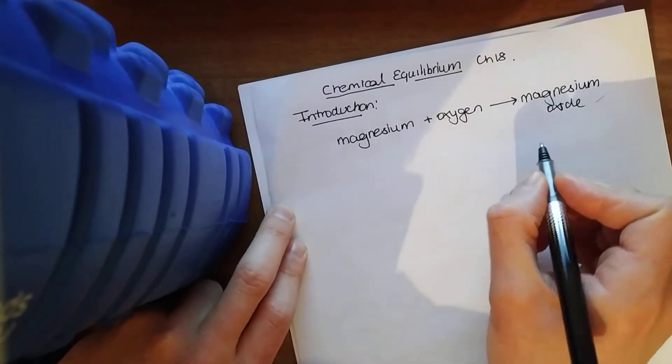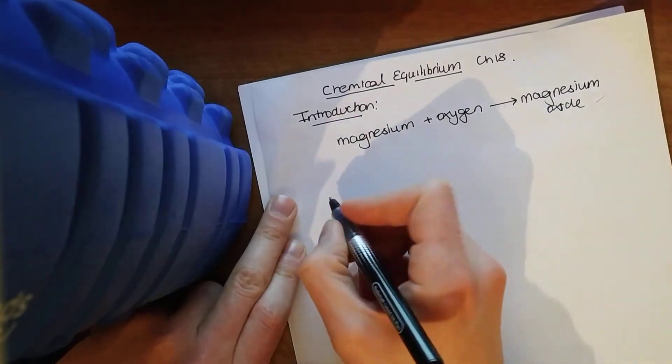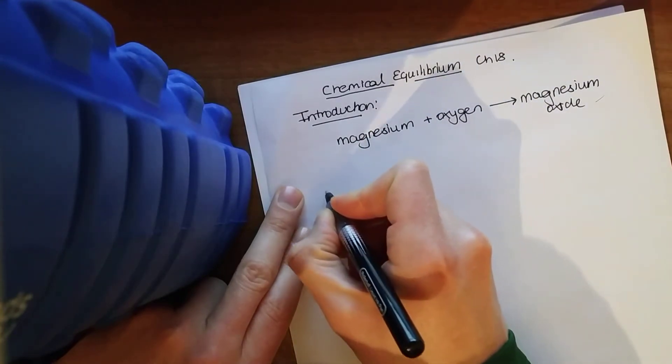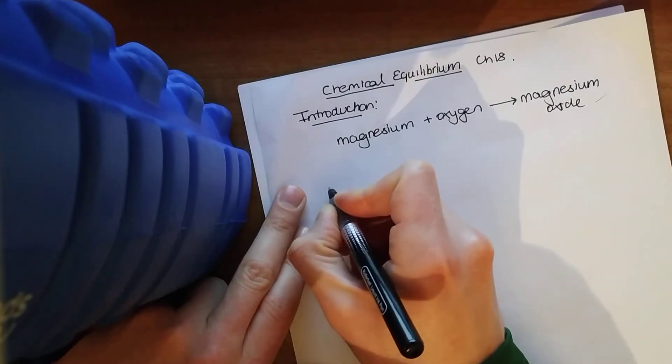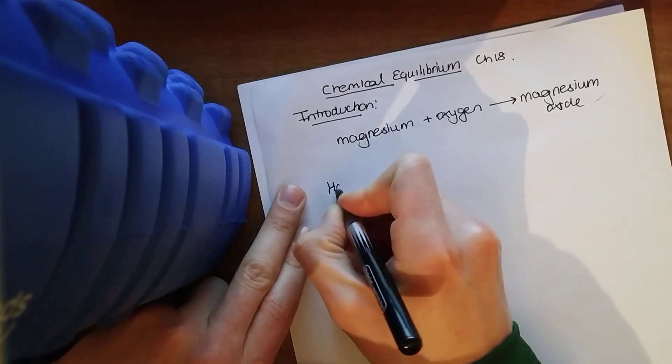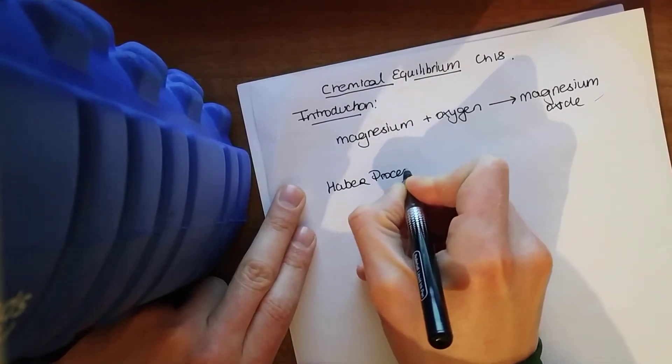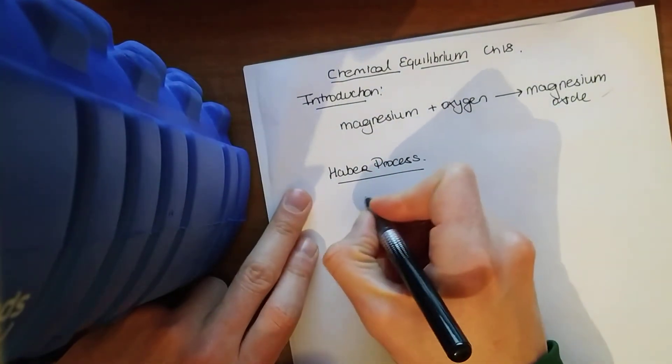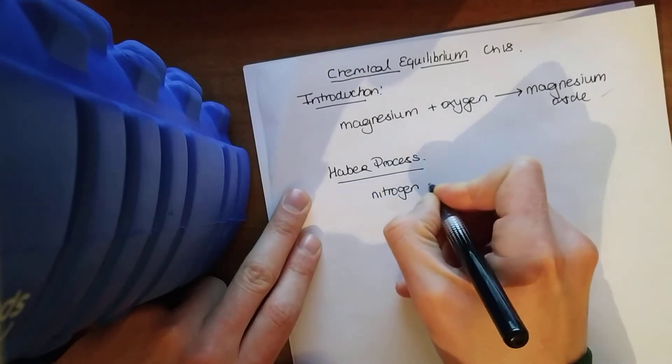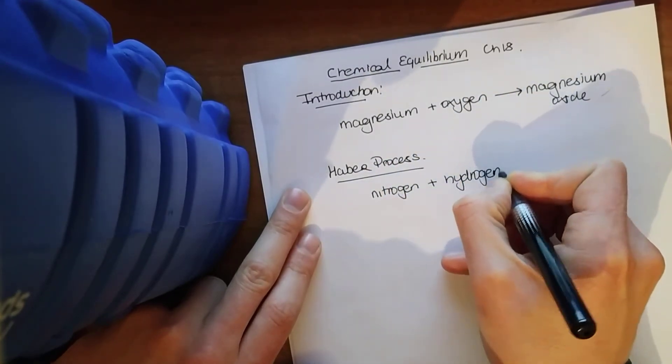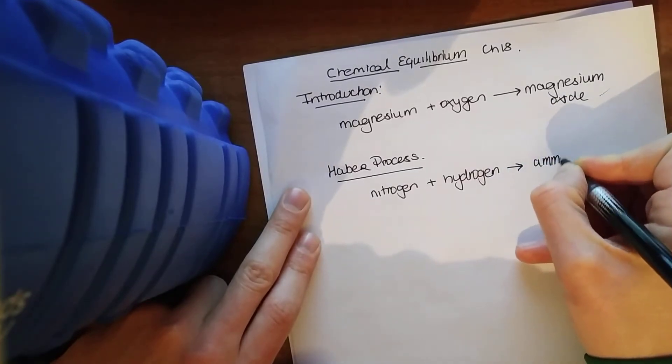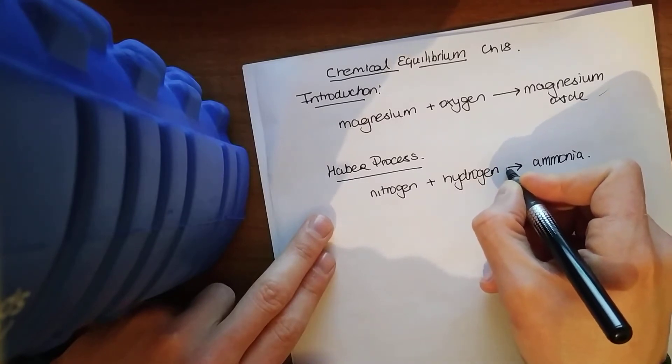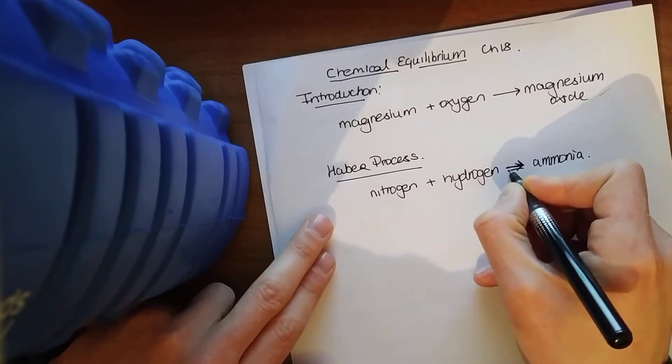Now, not all reactions go to completion. So there's a very famous example of this. Occurs in the production of ammonia and occurs in the Haber process - the Fritz-Haber process. Now in this reaction, we take together our two reactants, say our nitrogen and hydrogen, and we form our product at the end, ammonia. Now already I've done this wrong because technically this reaction doesn't go to completion.